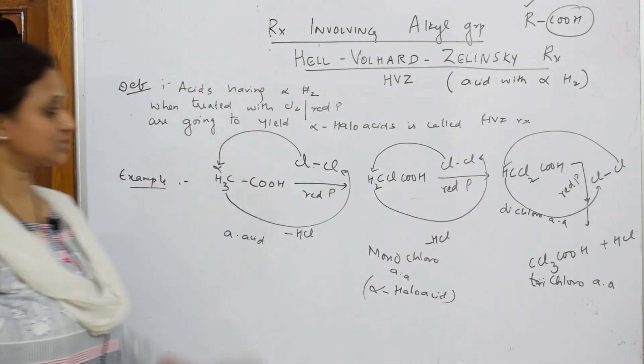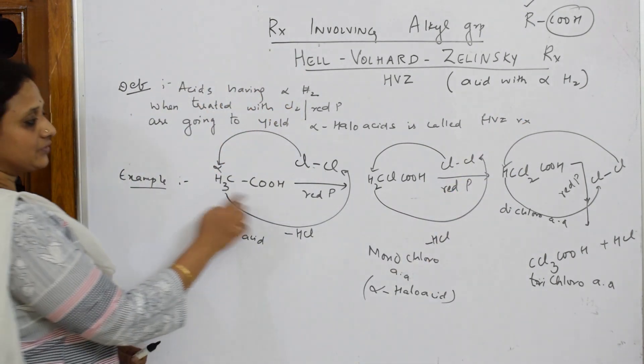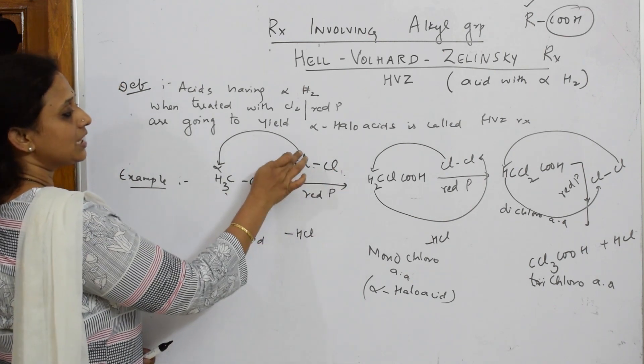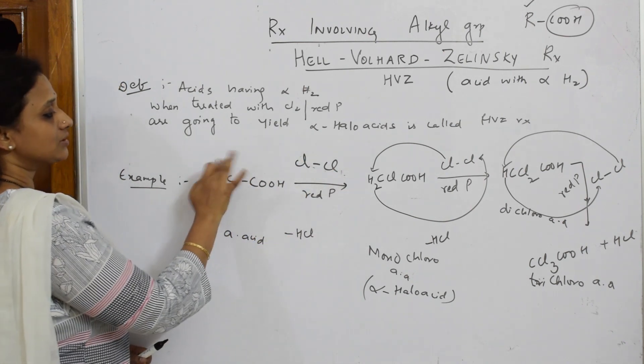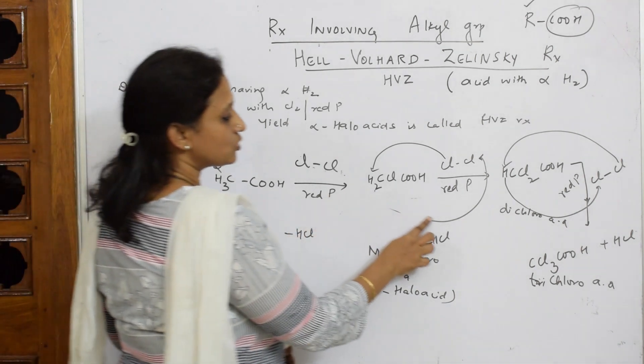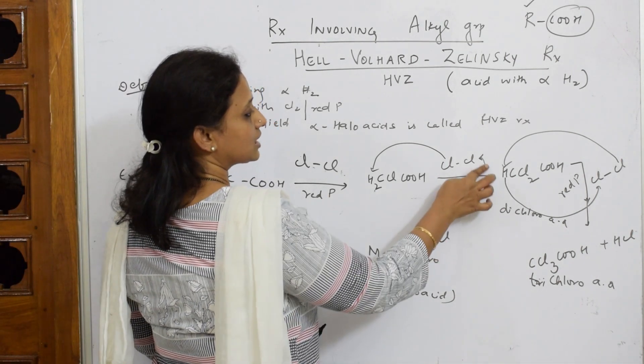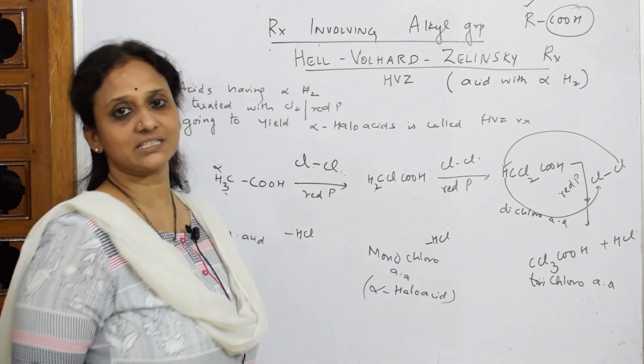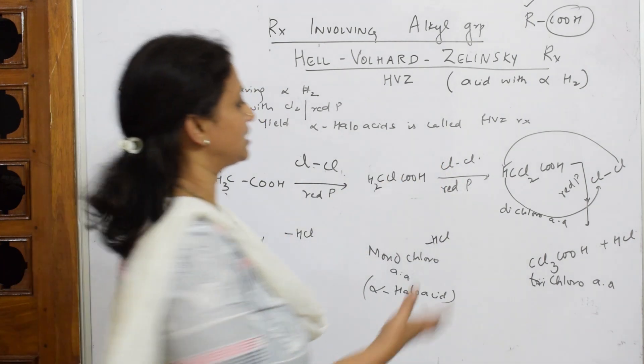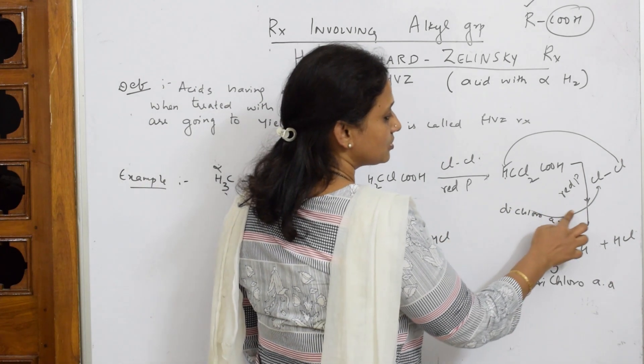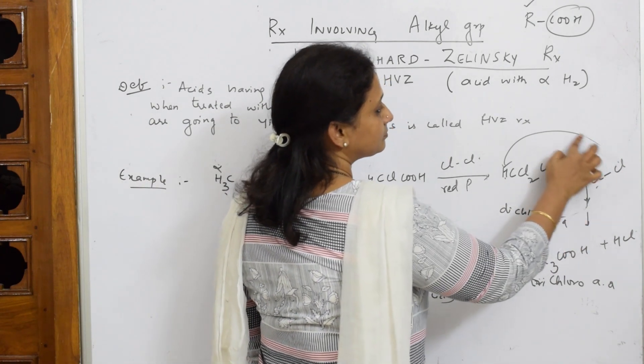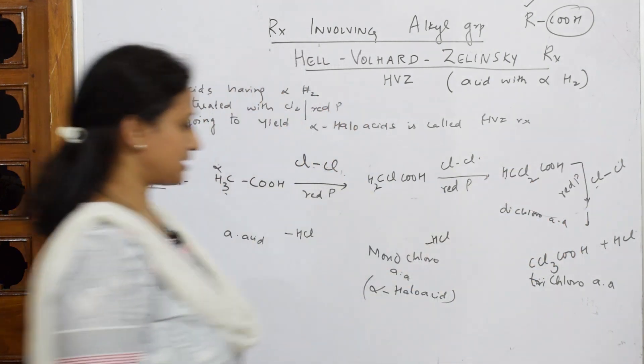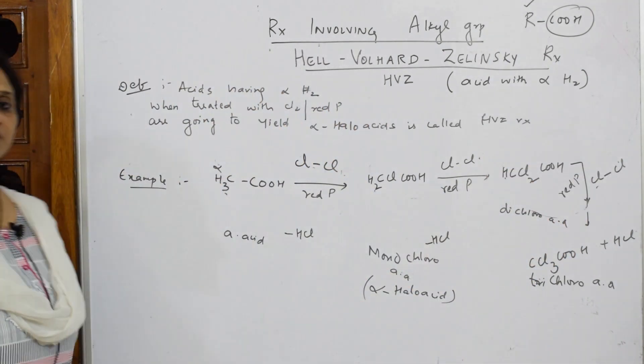That's it, this is your HVZ reaction. Simple. I have given arrows - if you feel this is confusing, all the arrows removed. Hope you understand the concept. Simple: take out one hydrogen and that comes out as HCl and send one Cl inside. One Cl in, one HCl out. That's it. So this is your HVZ reaction.